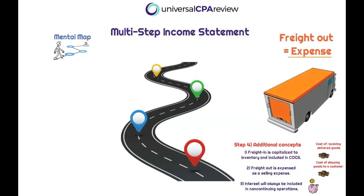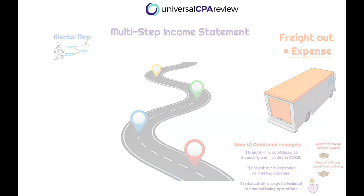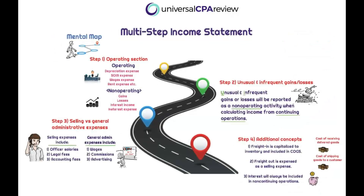Freight out is the cost of shipping goods to a customer. It's expensed as a selling expense within SG&A in the operating section of the multi-step income statement. So income from continuing operations will include the freight out expense. Also note that interest will always be included in the non-operating section. That's our multi-step income statement mental map — we need to know it.